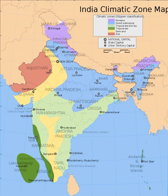Though the Tropic of Cancer—the boundary between the tropics and subtropics—passes through the middle of India, the bulk of the country can be regarded as climatically tropical. As in much of the tropics, monsoonal and other weather patterns in India can be wildly unstable. Epochal droughts, floods, cyclones, and other natural disasters are sporadic, but have displaced or ended millions of human lives.